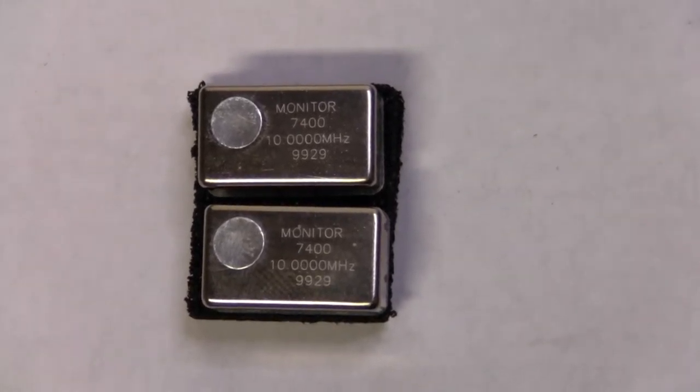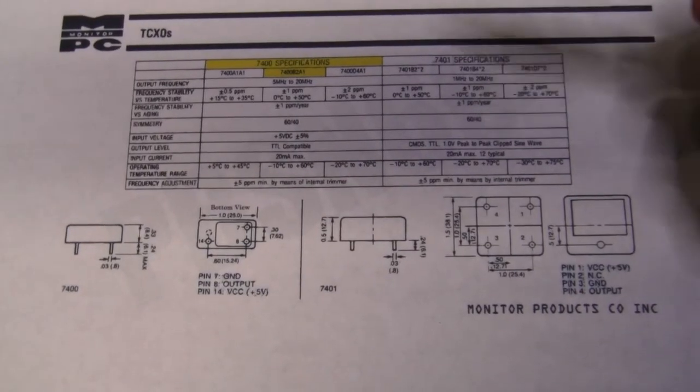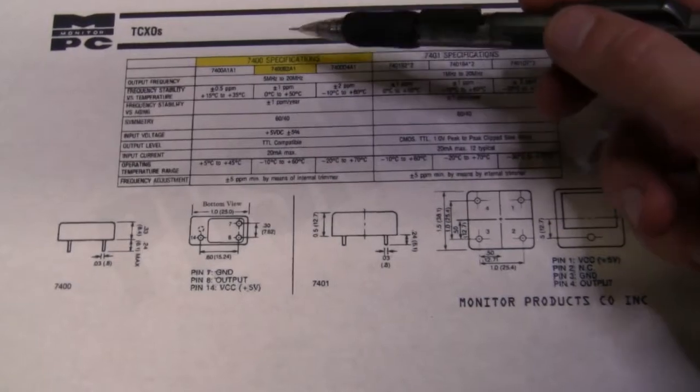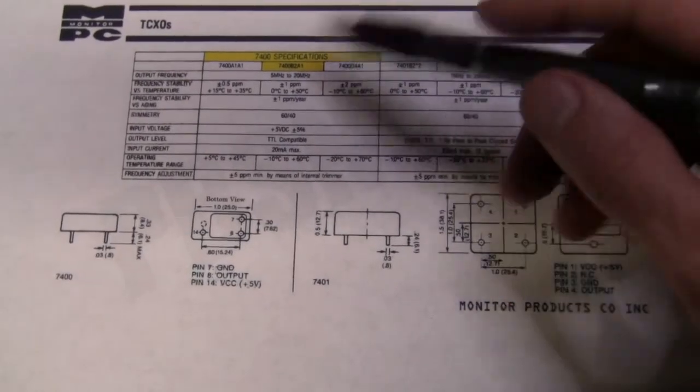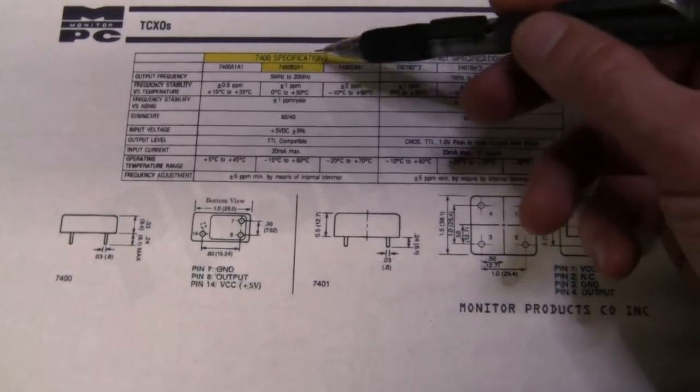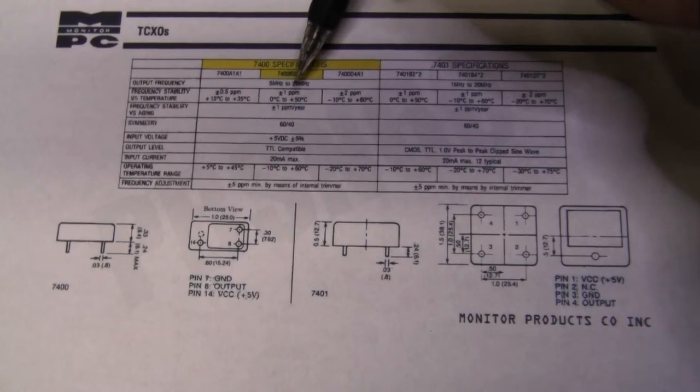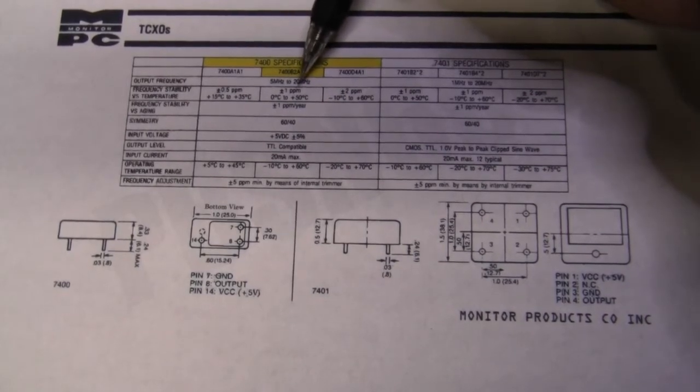Let's have a look at the specs. So here we are the specs. I have this model which is highlighted in yellow. So as we can see, they are rated at plus minus 1 ppm. For those who don't know, this stands for part per million.